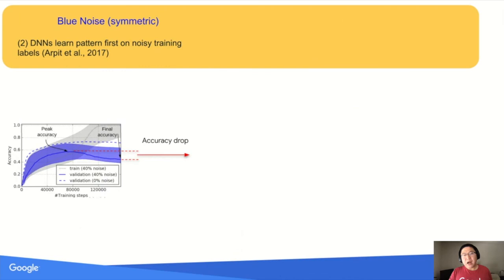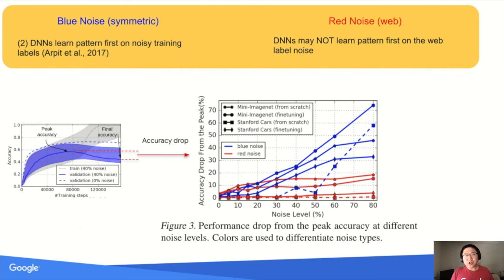Our second finding is inspired by Arpit, who found deep networks learn patterns first on noisy training labels. Looking at the solid line plotting validation accuracy at 40% noise level, accuracy first increases then decreases during training, creating a drop between peak accuracy and final accuracy. We plot accuracy drop on the y-axis and noise level on the x-axis. The accuracy drop increases with noise level for blue noise, confirming Arpit's finding. However, for red noise the accuracy drop is insignificant, especially on the fine-grained classification task on Stanford Cars where the drop almost approaches zero. These results indicate that deep networks may not learn patterns first on real-world web noise data.